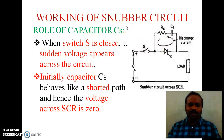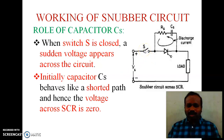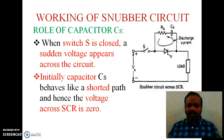Working of the snubber circuit: we first consider the role of the series capacitance CS. When switch S is closed, a sudden voltage appears across the circuit. If we close the switch S, the supply voltage suddenly appears across the thyristor, which is also present across the capacitor. Initially, the capacitor will act as a short circuit, so the voltage across the short circuit is 0. The same voltage is also present across the thyristor — that is, 0 voltage is present across the thyristor.